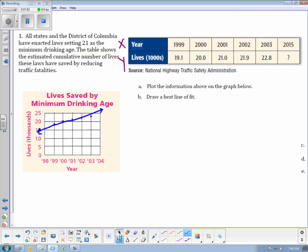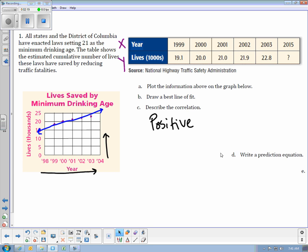Then the next part is describe the correlation. Correlation means what is y doing as x increases. So as x moves to the right, is y going up or down? So if we look at x going to the right, we can see that y is going up. That means that we have a positive correlation for this graph. Because as x increases, y increases as well.